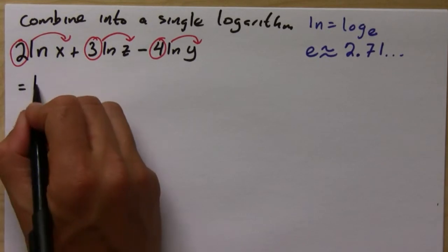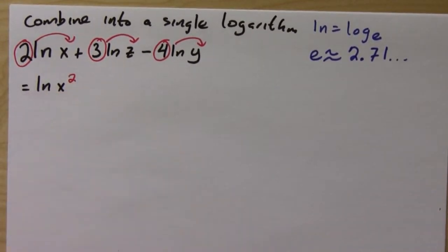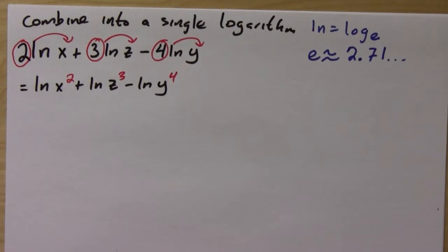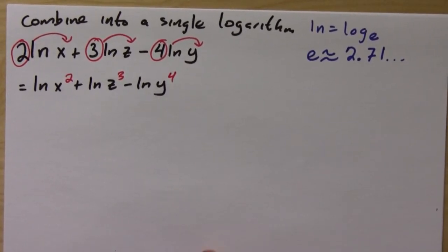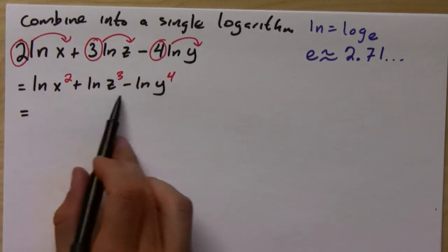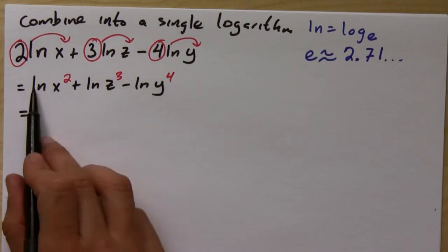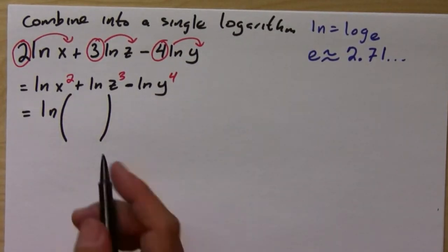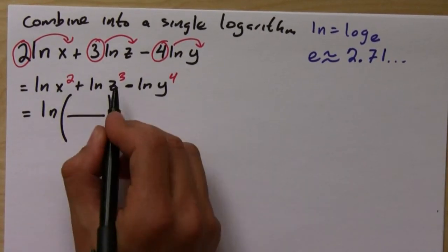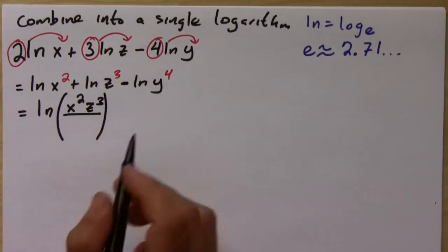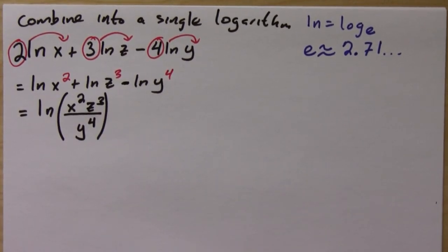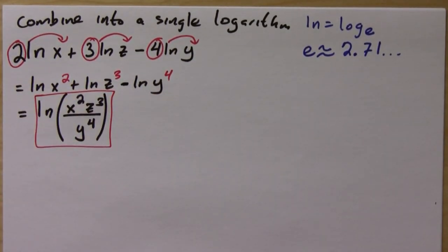Now combine them: the positive terms become multiplication and the negative terms become division. So this combines into the single logarithm ln(x²z³ / y⁴), where x² and z³ are multiplying in the numerator and y⁴ is in the denominator because its log was negative. And that's it — all combined into one logarithm.